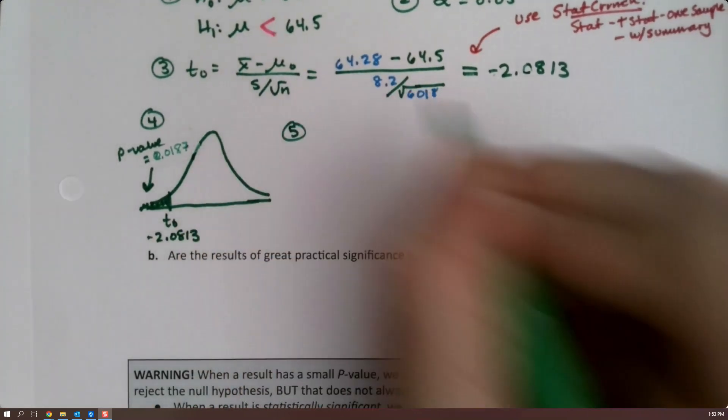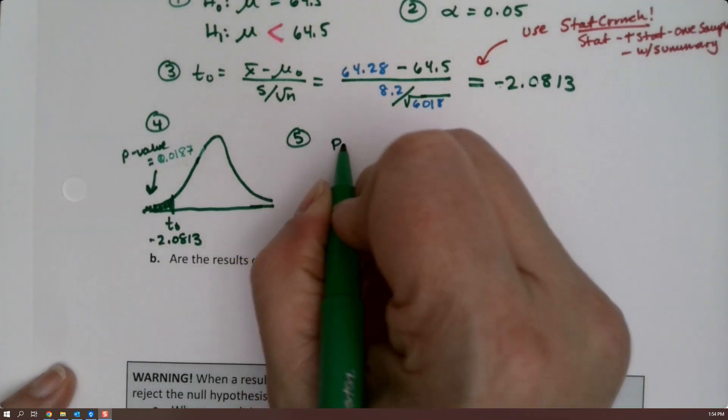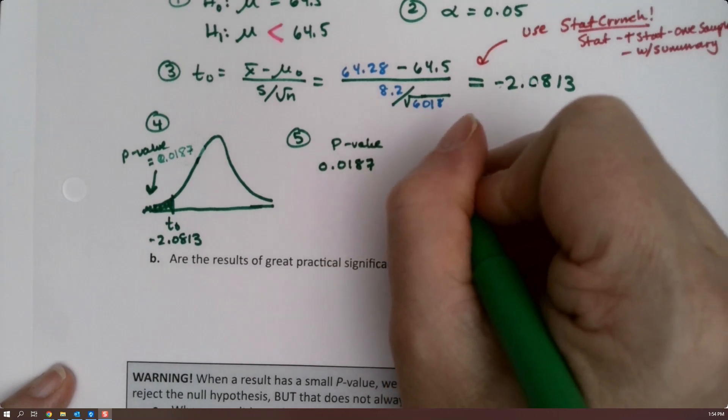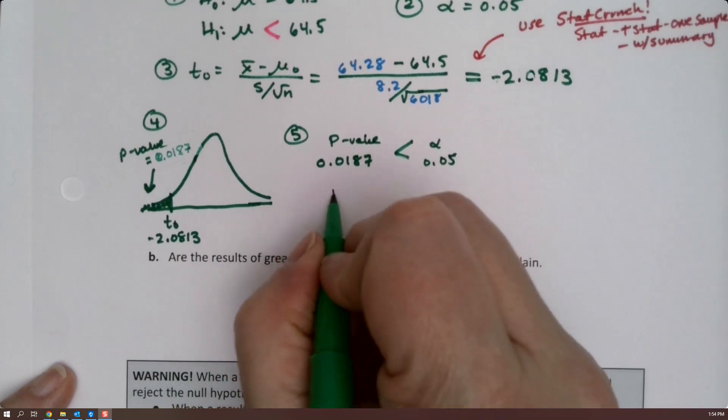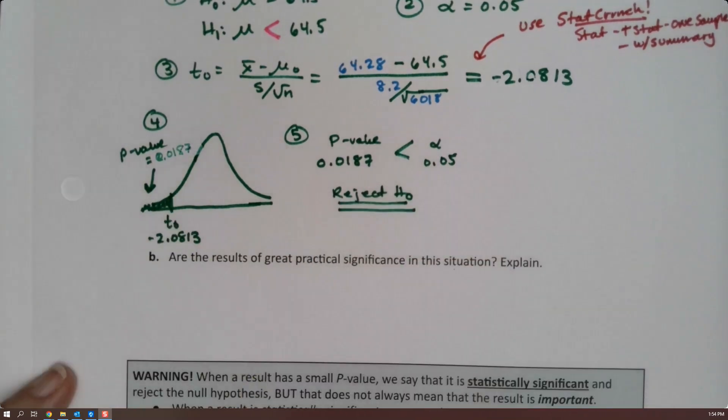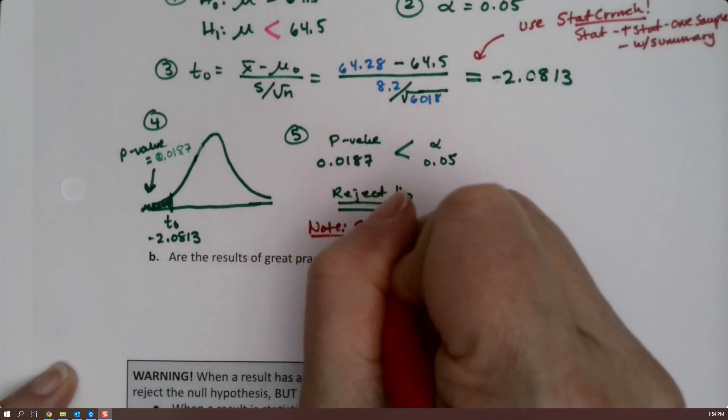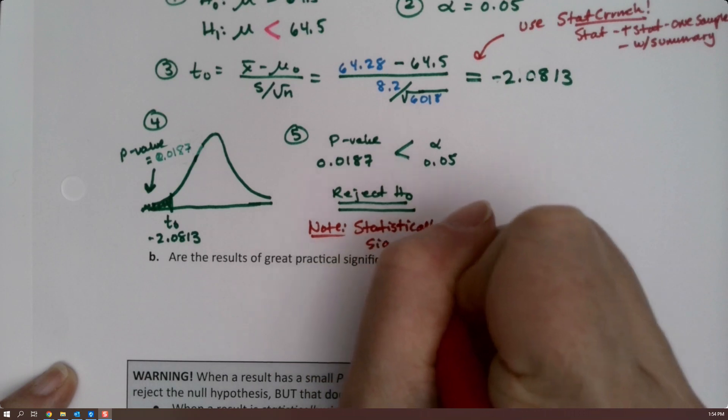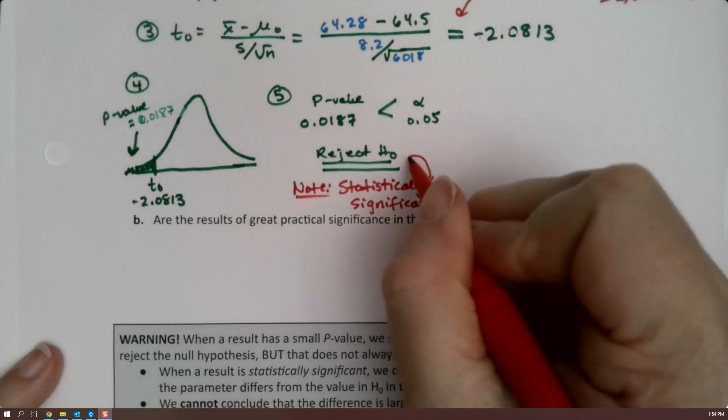Step five, we have to make a decision. Our p-value is 0.0187 and our alpha is 0.05. Well, this is less than that, so therefore we're going to reject H0. Which, by the way, means that the results are statistically significant. That's what statistically significant means. When you get to reject H0, that means statistical significance has been reached. These two things are one and the same.